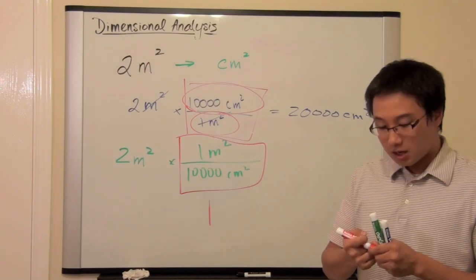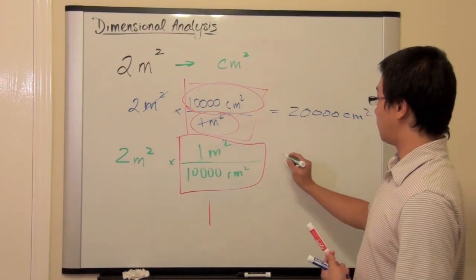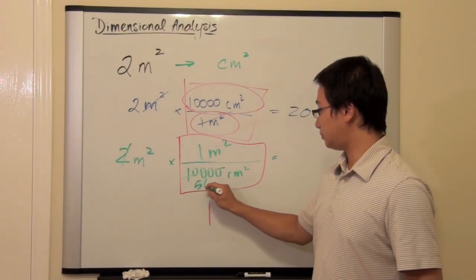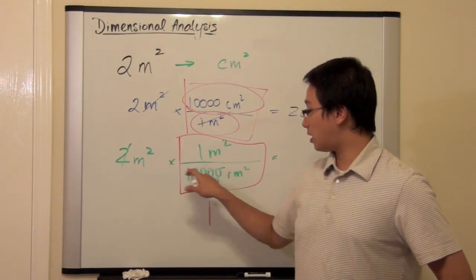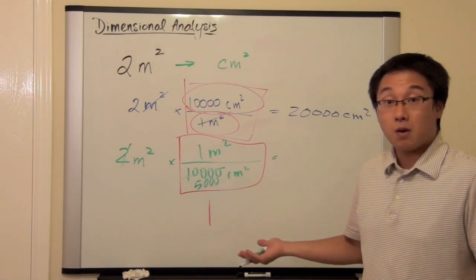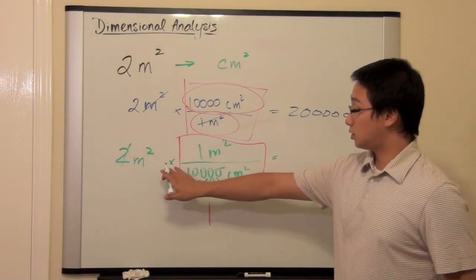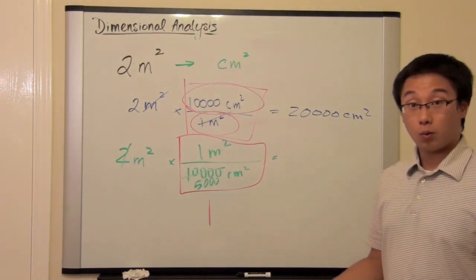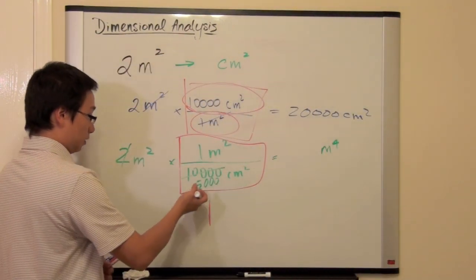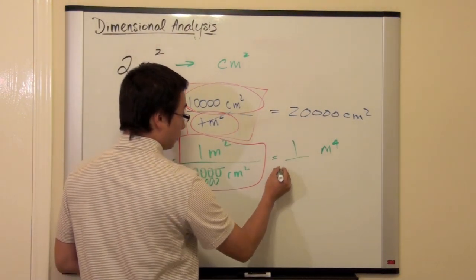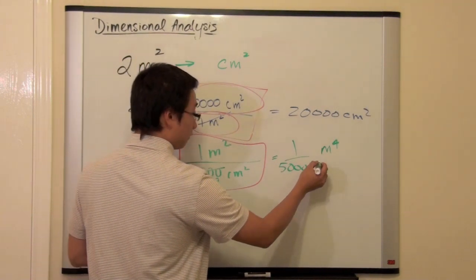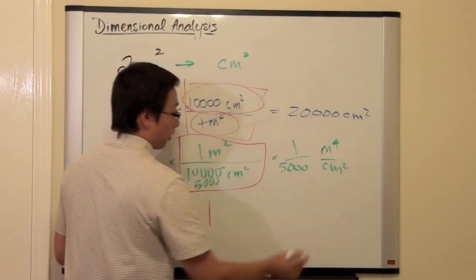Now, the problem comes in when we do the calculation. When we do the calculation, there is nothing that we can cancel out. We may be able to simplify this one. 2 and the 10,000 we can simplify a little bit. And let's write down our answer since that's the most simplification we can do. So meter square times meter square, that would be meter to the fourth power. And what is left in the denominator is this 5,000. And since I don't have my calculator in my hand, I'm just going to write 1 over 5,000. And we have centimeters square.